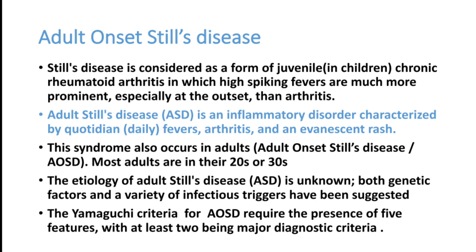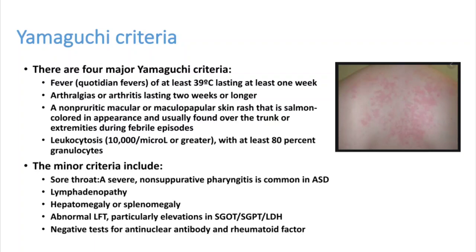There is a diagnostic tool called the Yamaguchi criteria. The major criteria include: daily fever occurring at least once per week; arthralgias or arthritis lasting two weeks or longer; and a non-pruritic macular or maculopapular skin rash that is salmon-colored — which is very important. This salmon color is best seen in fair-skinned persons and may go unnoticed in others. The rash occurs mainly on the trunk or extremities during febrile episodes. A WBC count greater than 10,000 is also a major criterion.